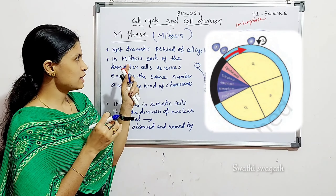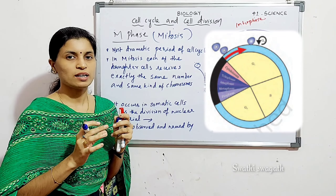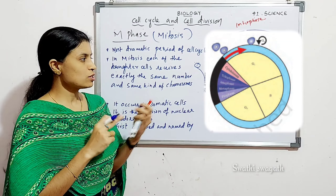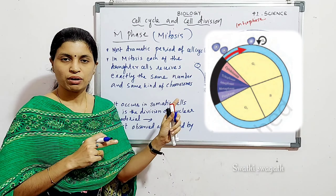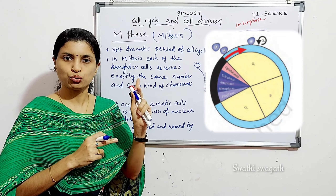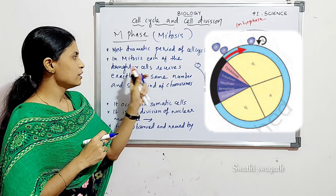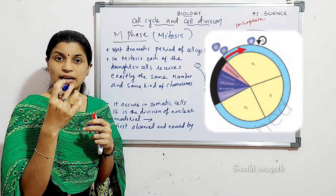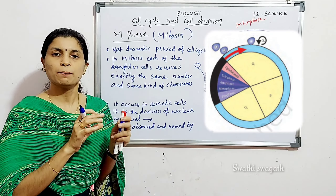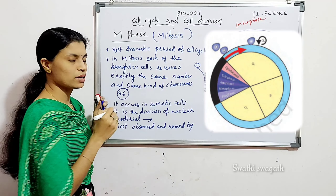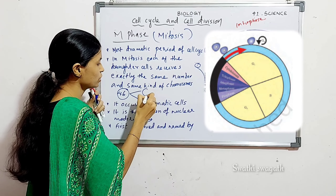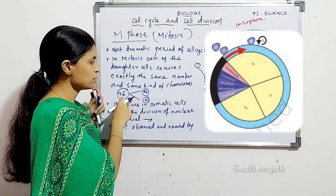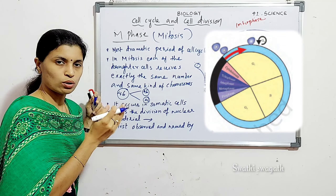Before going further, remember M phase or mitosis is a type of cell division. The parent cell divides and forms daughter cells, and this daughter cell receives the same amount and same kind of chromosome from the parent cell. For example, if the parent cell has chromosome number 46, it divides by mitosis and forms two daughter cells, each with 46 chromosomes. That is the case in humans.